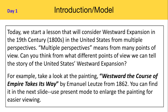Today, we will start a lesson that will consider westward expansion in the 19th century, or the 1800s, in the United States from multiple perspectives. Multiple perspectives means from many points of view. Can you think from what different points of view we can tell the story of the United States westward expansion? For example, let's take a look at the painting Westward, The Course of Empire Takes Its Way, by Emmanuel Leutze from 1862. You can find it in the next slide.